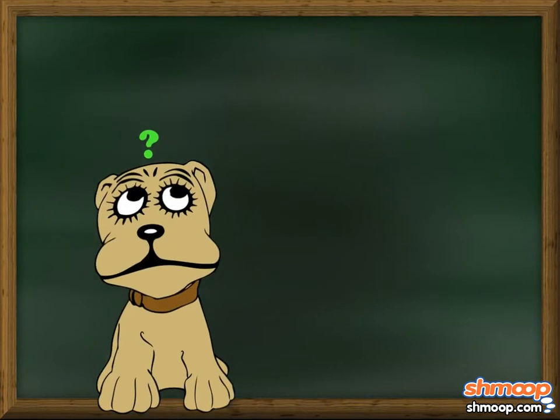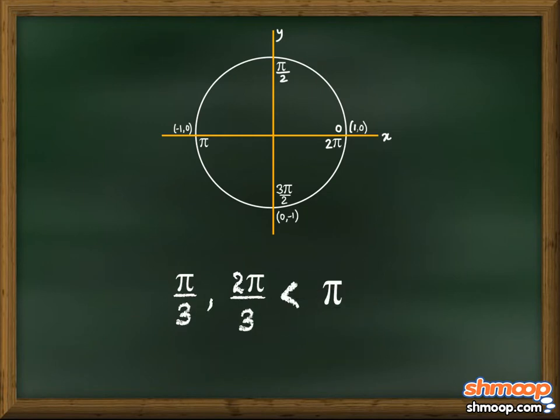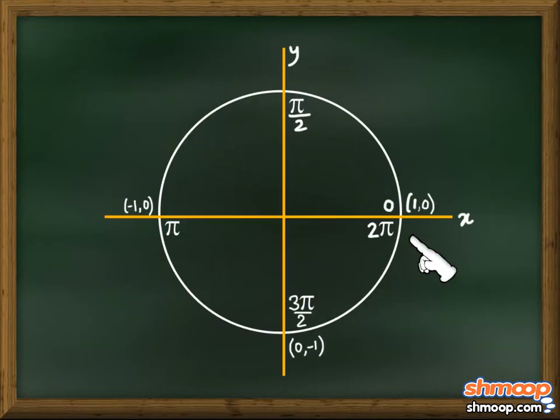Speedy realizes that we've found two answers within an interval of π, because both π/3 and 2π/3 are less than π. That makes sense because the tangent function has a period of π, which means it goes through one full cycle for every π radians.